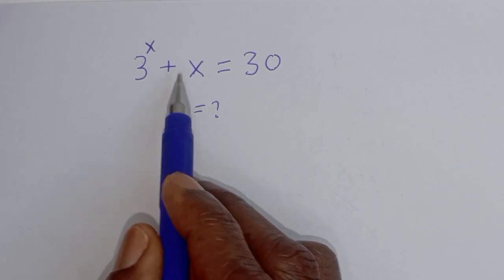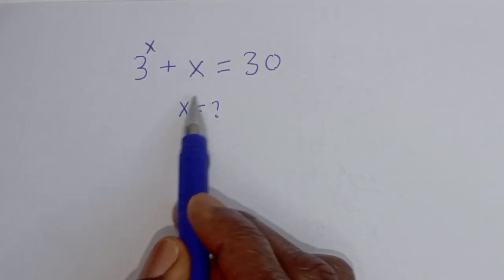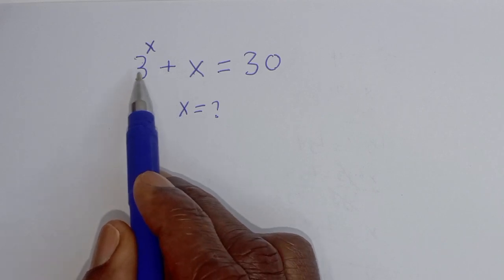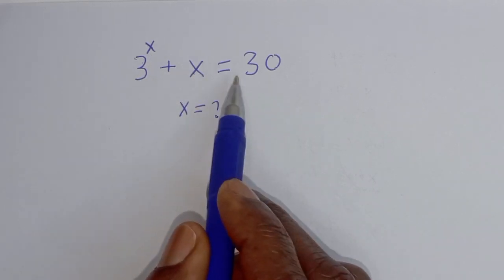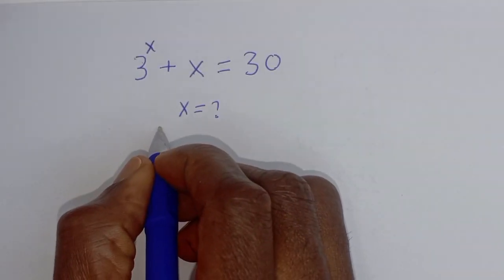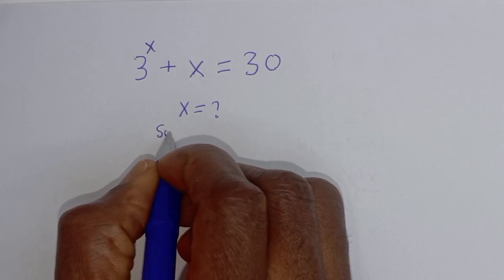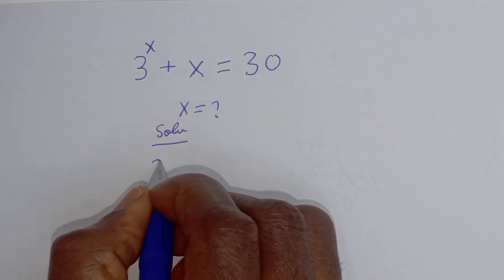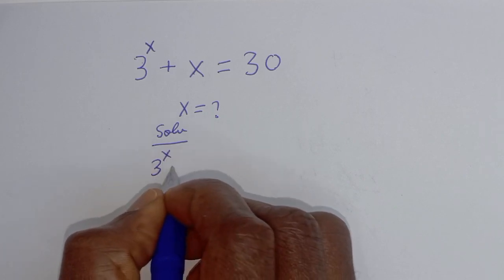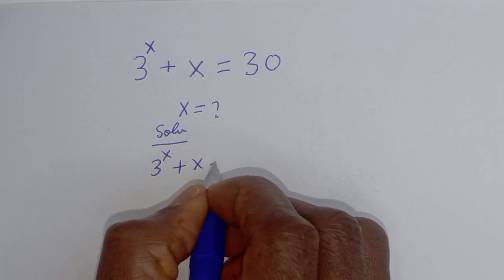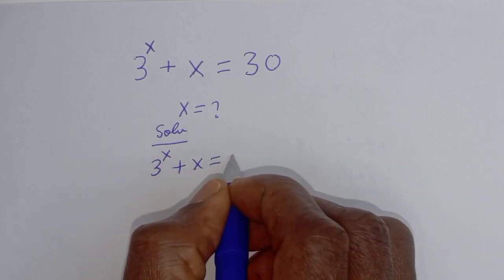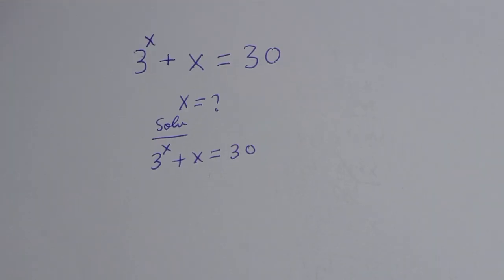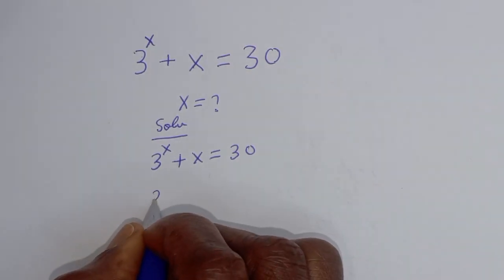Hello! How to solve for s from this given equation using the Lambert W function: 3 raised to the power s plus s is equal to 30. Solution: 3 raised to power s plus s is equal to 30.